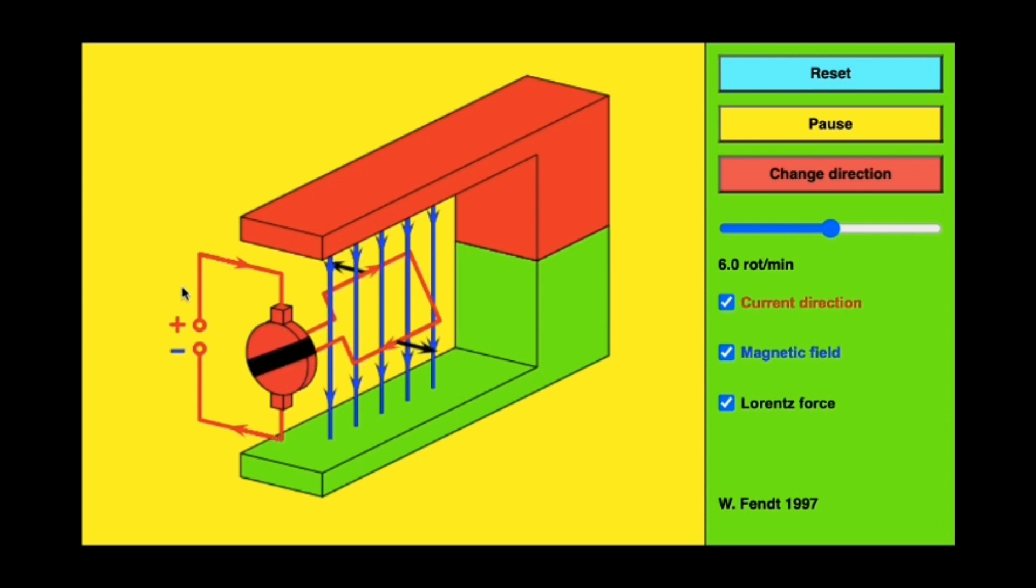You can see that it is a direct current source because the current maintains the same direction throughout.